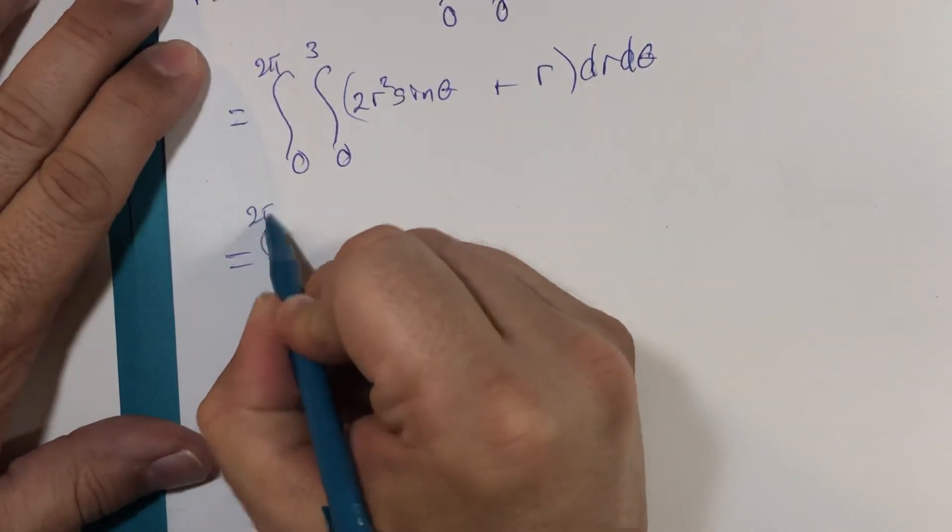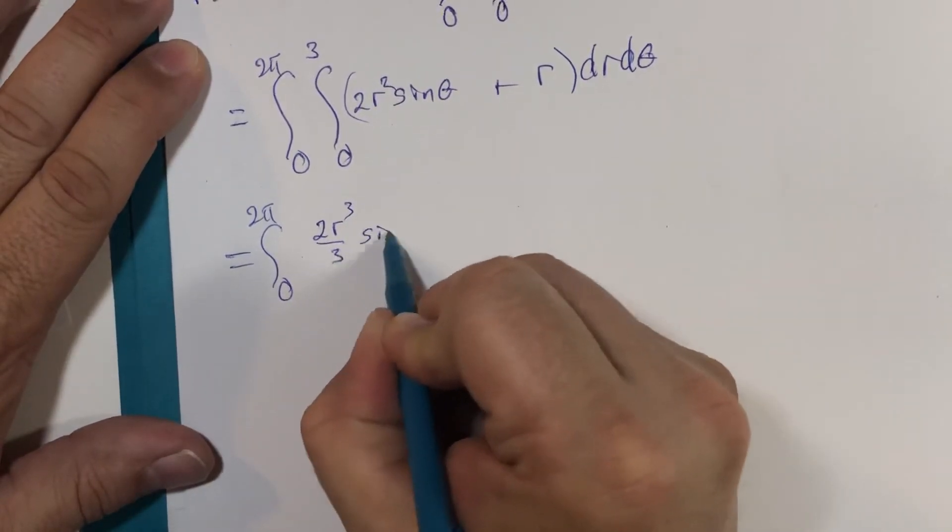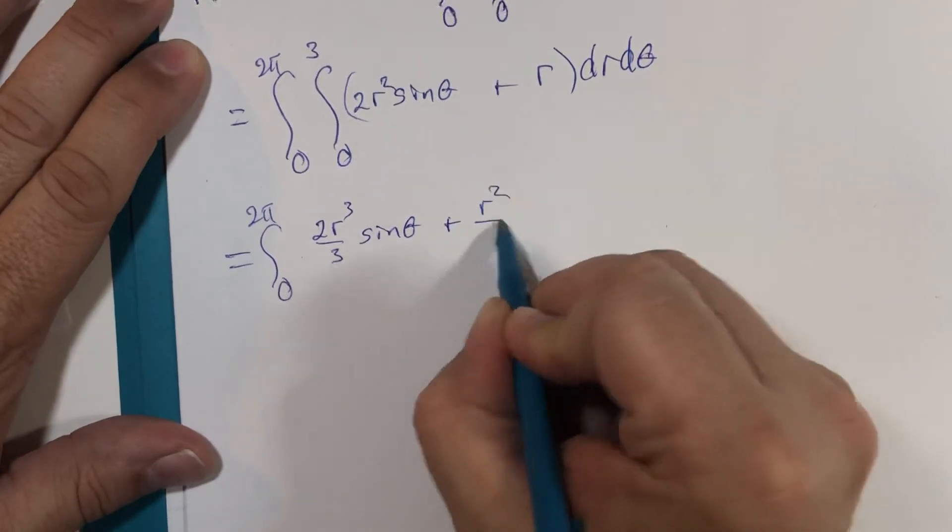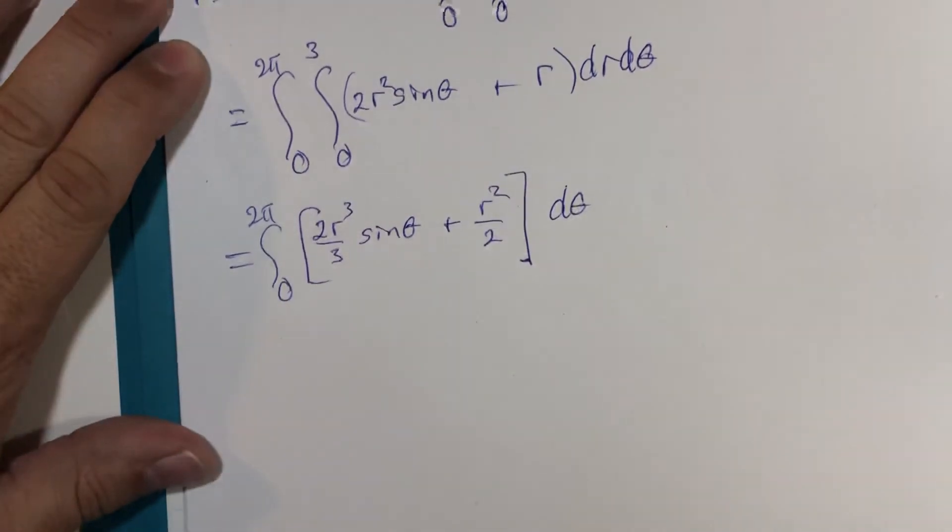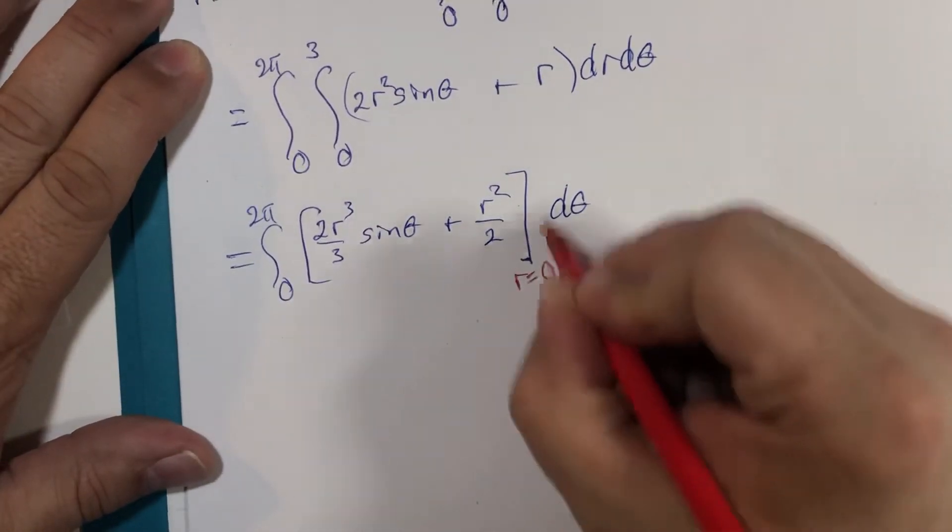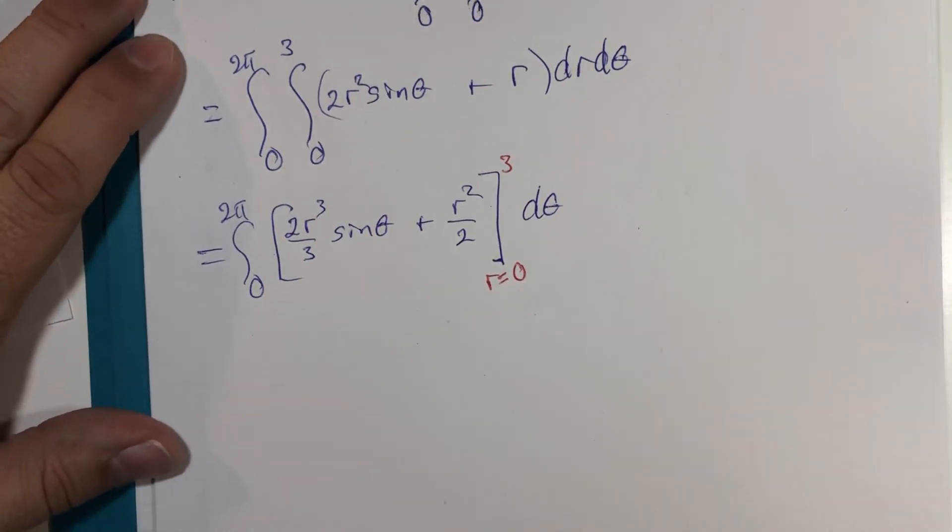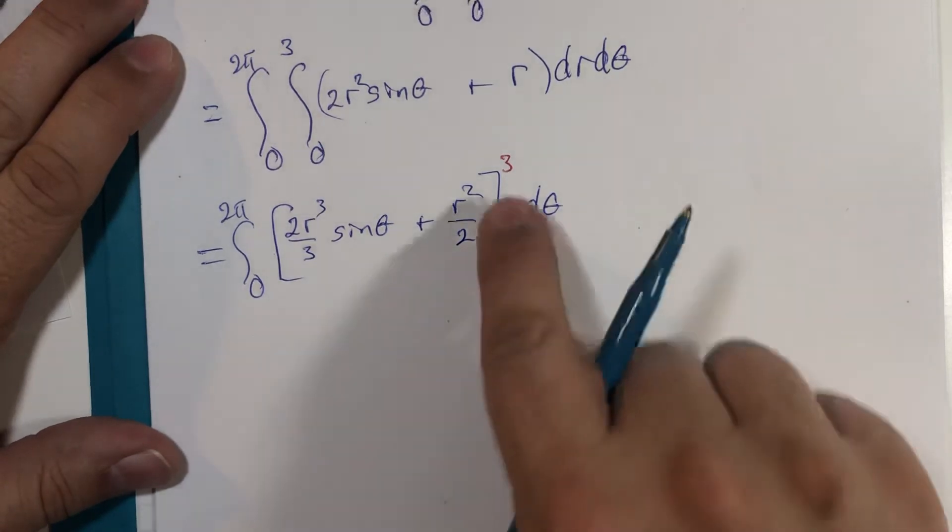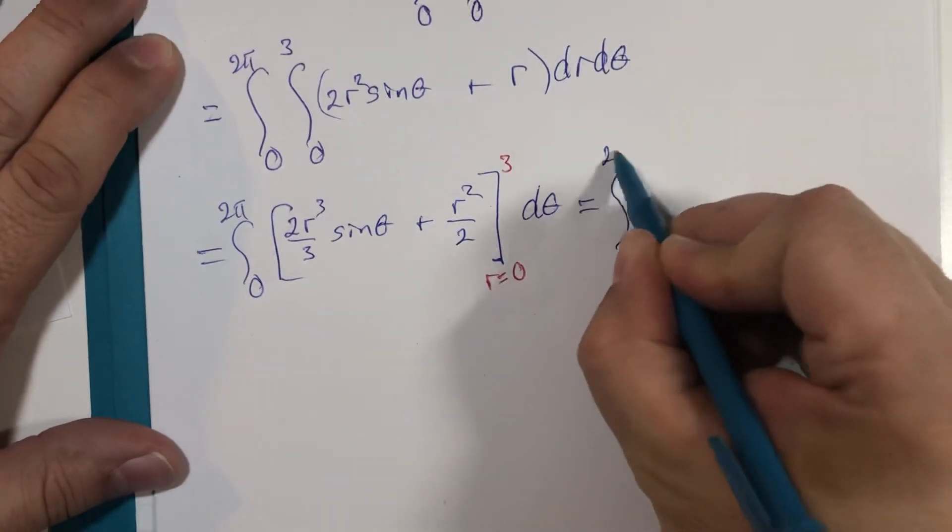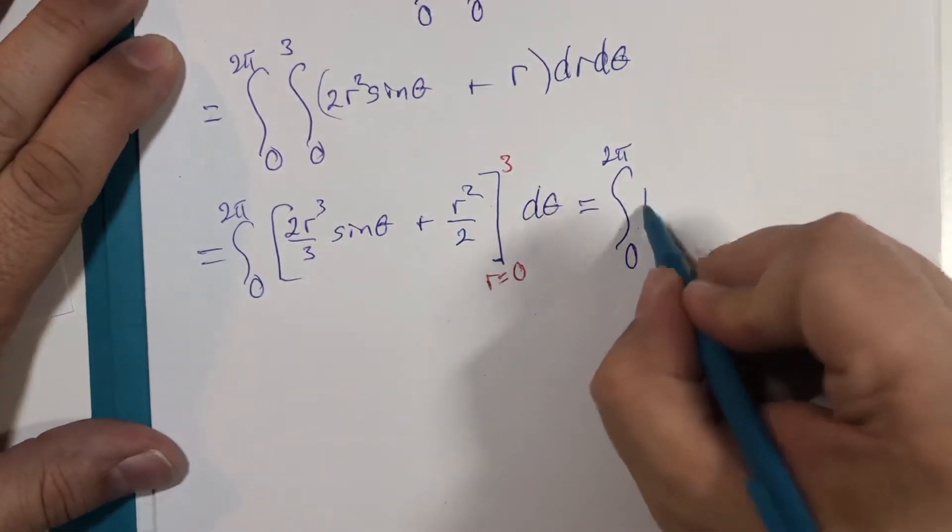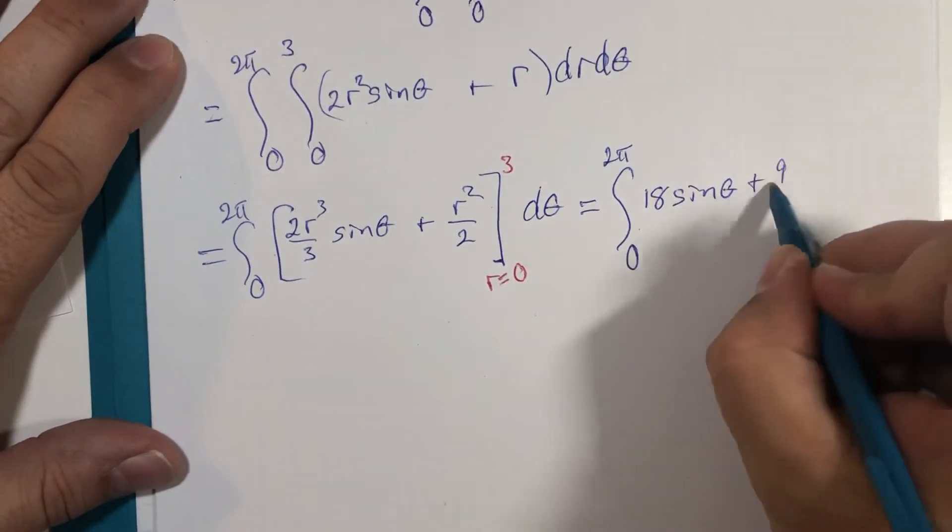0 to 2 pi. R is the variable. I get 2r to the 3rd over 3 times sine of theta plus r to the 2nd over 2. And r goes from 0 to 3. 3 cubed is 27, divided by 9, then 18. Okay, so this is going to become 0 to 2 pi, 18 sine theta plus 9 halves.